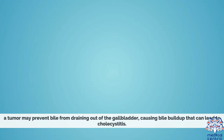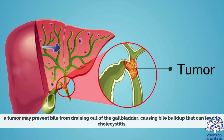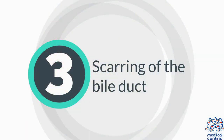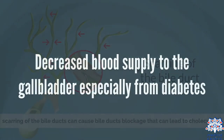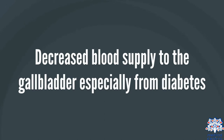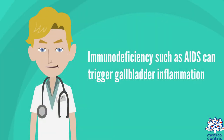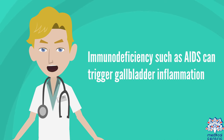A tumor may prevent bile from draining out of the gallbladder, causing bile buildup that can lead to cholecystitis. Scarring of the bile ducts can cause blockage that can also lead to cholecystitis. Decreased blood supply to the gallbladder, especially from diabetes, and immunodeficiency such as AIDS, can trigger gallbladder inflammation.